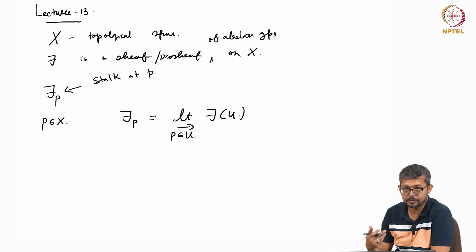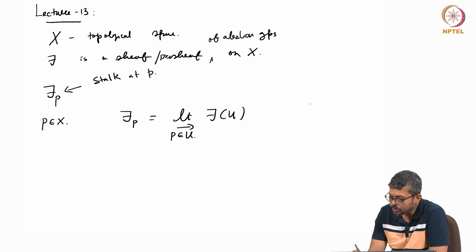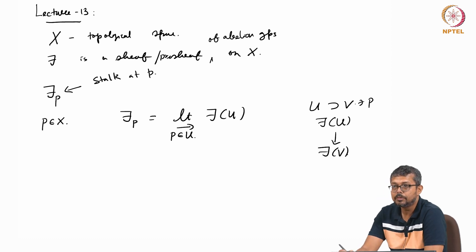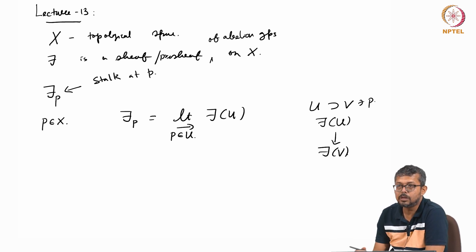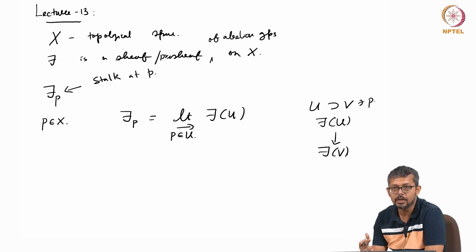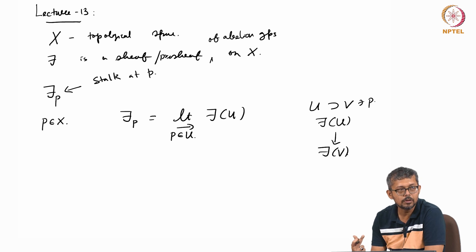Direct limit means you have a directed system. A directed system means: since it is a sheaf, if u contains v, there is a natural map f(u) to f(v). Now, if you have an open subset v containing p, and u is an open subset containing v, so u contains p. This forms a directed system — the collection is the set of all open subsets containing p, with a map from f(u) to f(v) whenever v is inside u and both contain p.